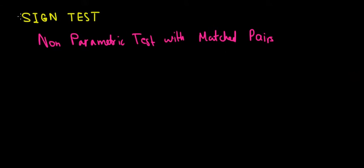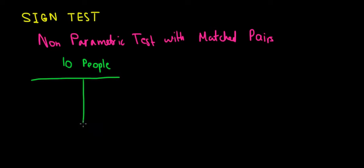To make it more concrete, let's take an example. We take 10 people who run outside and run on a treadmill — the same 10 people in both settings. The intuition is that when we run outside, we have friction from the ground, so we probably run in a longer time than we would on a treadmill where things are more comfortable.